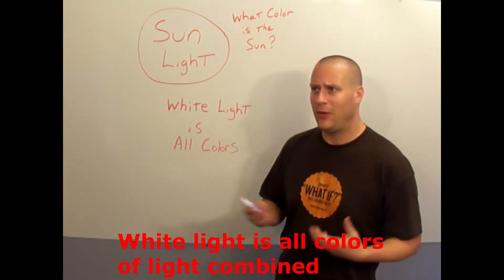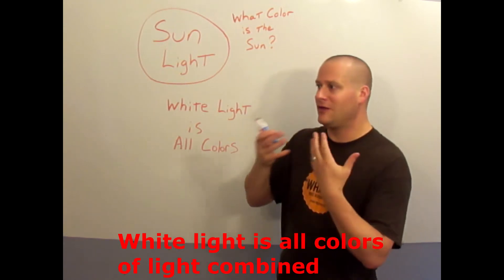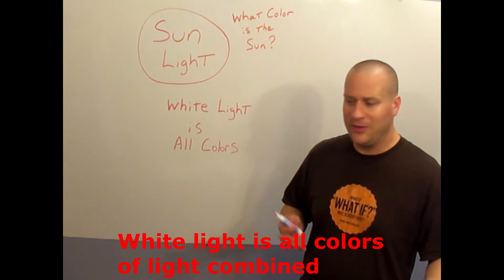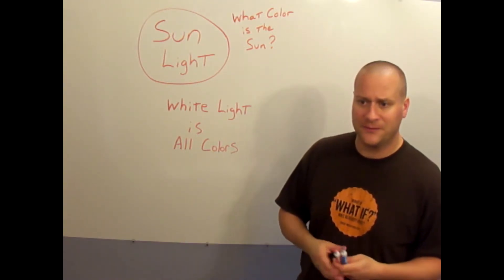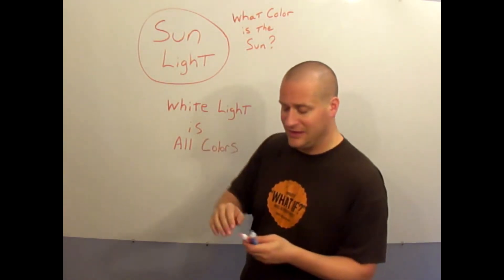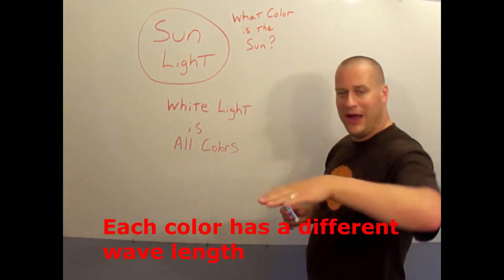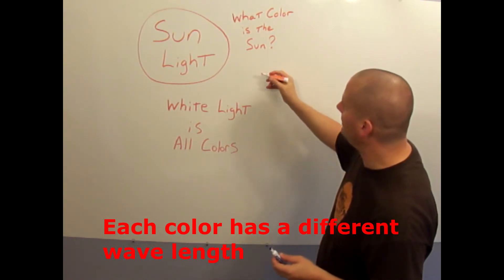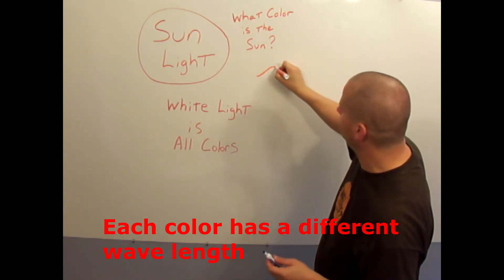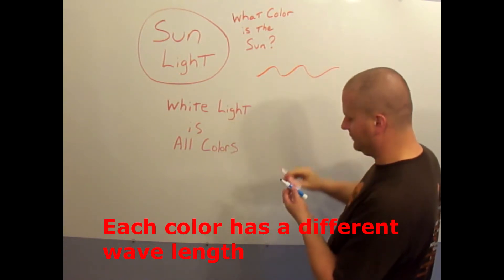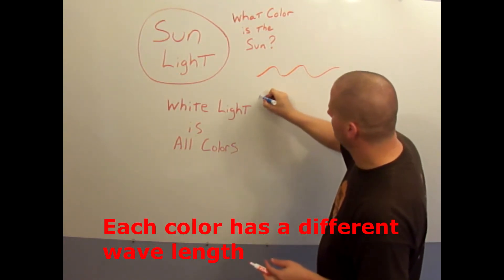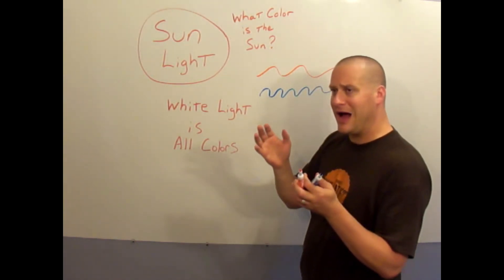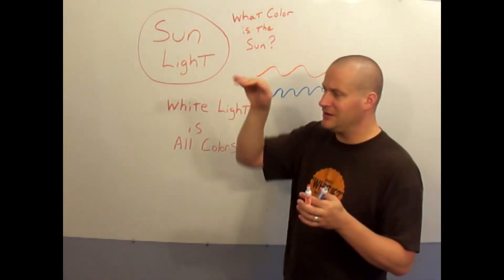So why do we see different colors? All the color of our universe is coming from the sun in that white light, but somehow we perceive things as different colors. Our eyes have the ability to tell the difference between waves of light. All of these waves are hitting us at one time, and in them are maybe orange waves which are a long wave, and short waves would be something like blue.